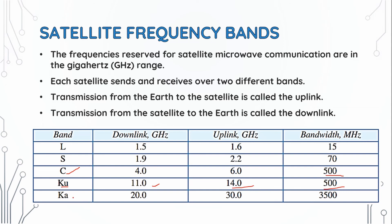KA means Kurt above, which means short above. The downlink is 20.0 GHz, uplink is 30.0 GHz, and bandwidth is 3500 MHz.